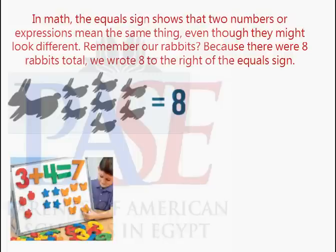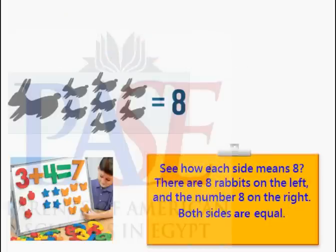Remember our rabbits? Because there were eight rabbits total, we wrote it to the right of the equals sign. See how each side means eight? There are eight rabbits on the left, and the number eight on the right. Both sides are equal.